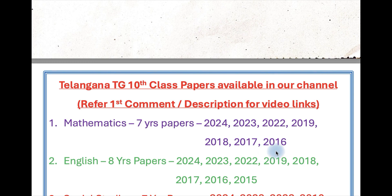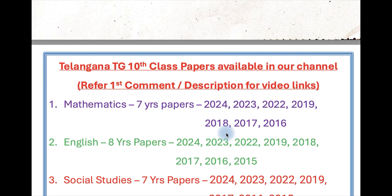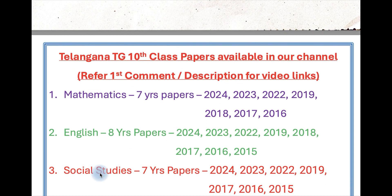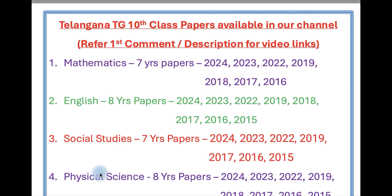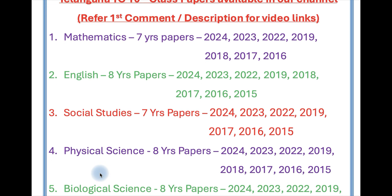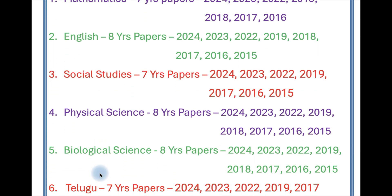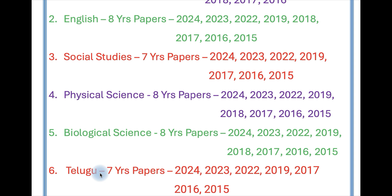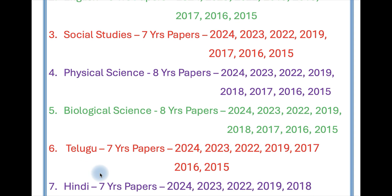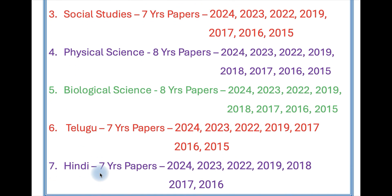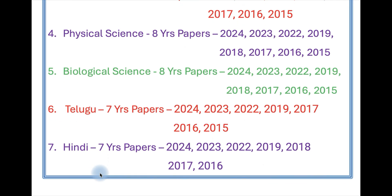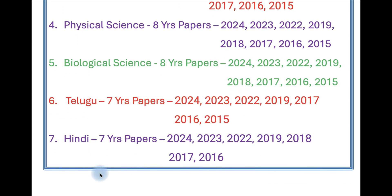Math — 7 year papers from 2016 to 2024. English — 8 year papers. Social — 7 year papers. Physics — 8 year papers. Biology — 8 year papers. Telugu 1st language — 7 year papers. 2nd language — 7 year papers, with around 2 or 3 years available for 1st language. Urdu paper is also available. All the links are available in the comment section.